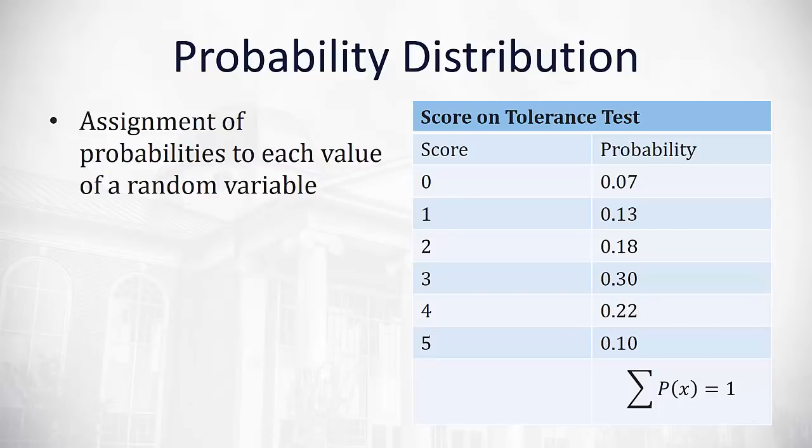For example, to the right here I have different scores on a tolerance test from 0 to 5, and the probability a student scored that score. Notice the sum of all these probabilities will always add to 1. A probability distribution has a total probability of 1.